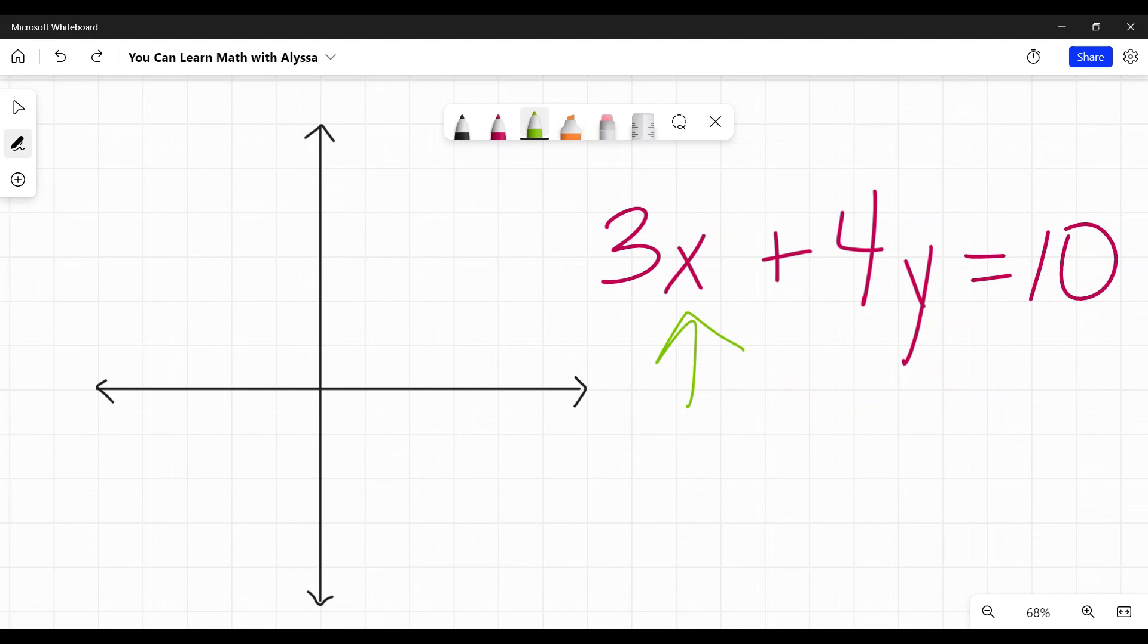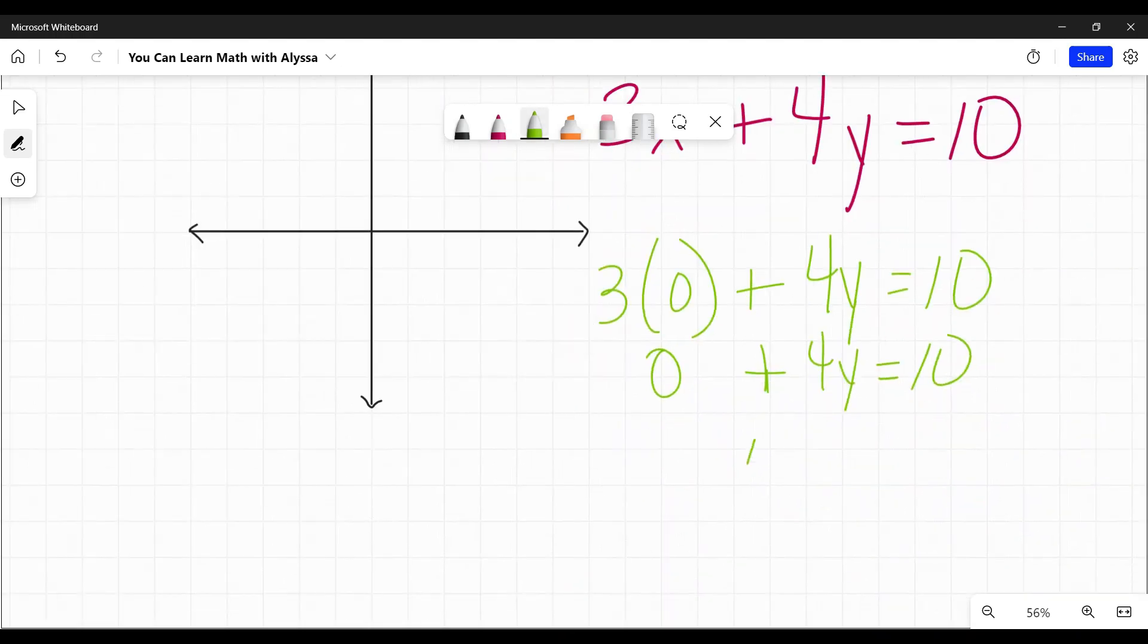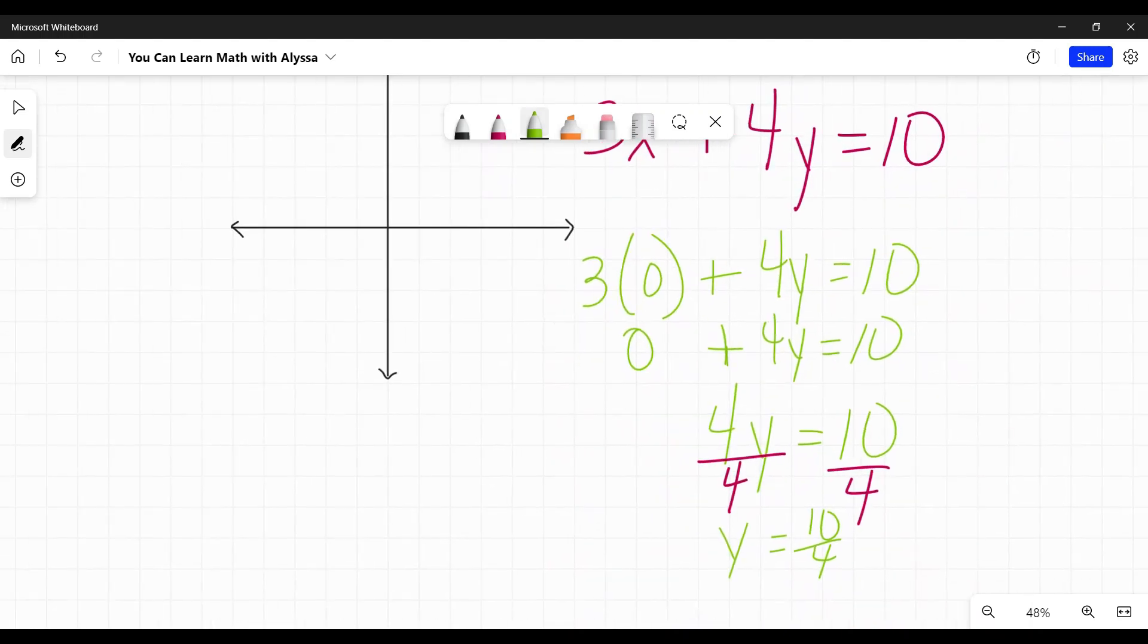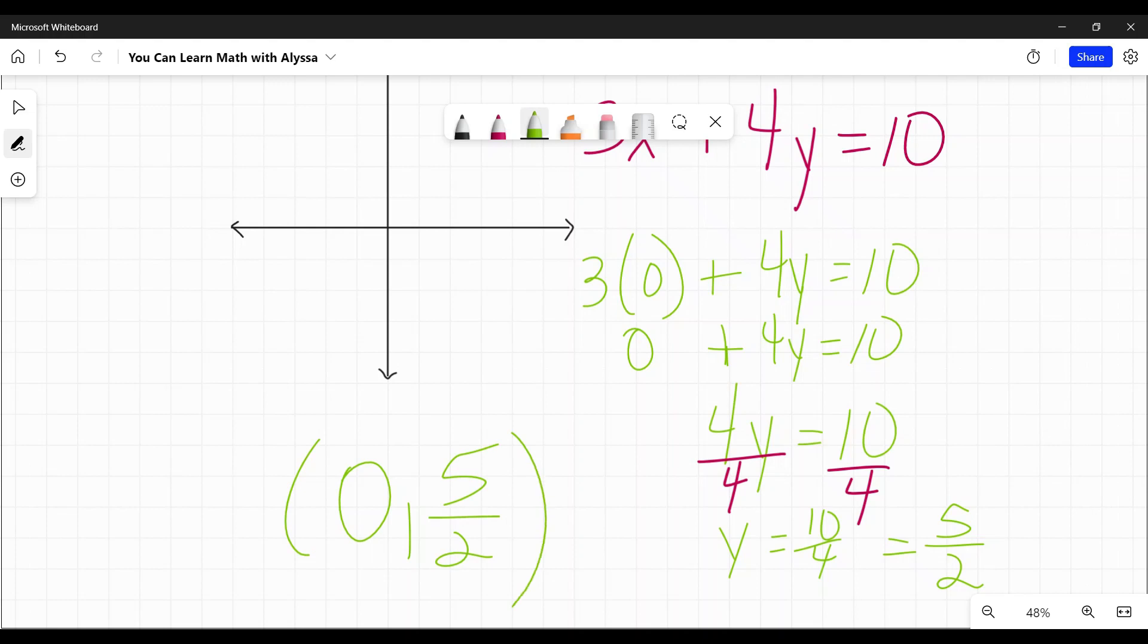And you would be exactly right if you thought that. Good for you. So let's do that. Let's plug in a zero for x. And then I get 3 times zero is just zero, plus 4y equals 10. So that's just gone now. And I am left with 4y equals 10. And to undo that 4 times y, I want to divide by 4 to undo that multiplication. So I get y equals 10 fourths, and I can simplify that fraction to five halves. So my y-intercept for that would be zero and five halves.